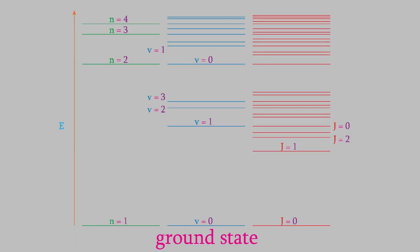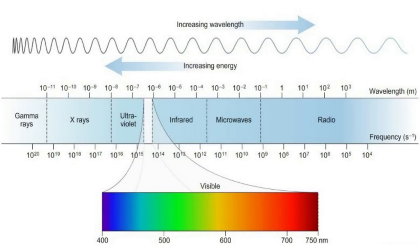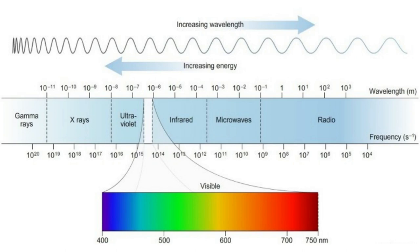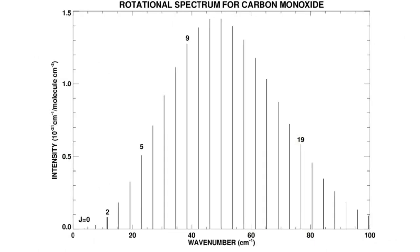Meanwhile, the vibrational energy levels are spaced more closely together, so it doesn't take as much energy to cause transitions between them. Photons in the infrared region have lower energy than visible photons — that's why infrared spectrometers are used to detect vibrations in molecules. We use photons with even lower energies — in the microwave region — to detect transitions between the rotational energy levels. So rotations, vibrations, and electronic transitions are each detected using a different wavelength region.